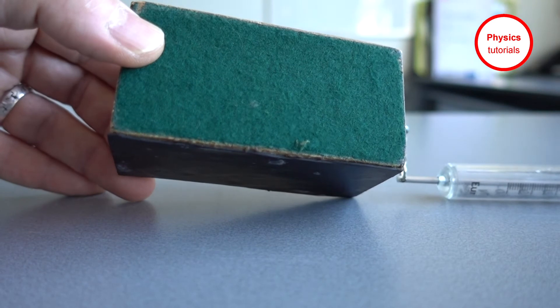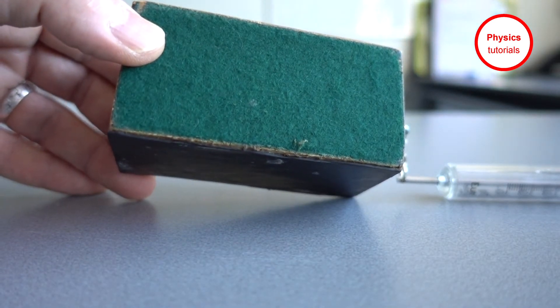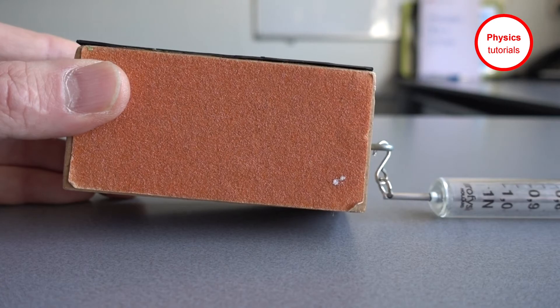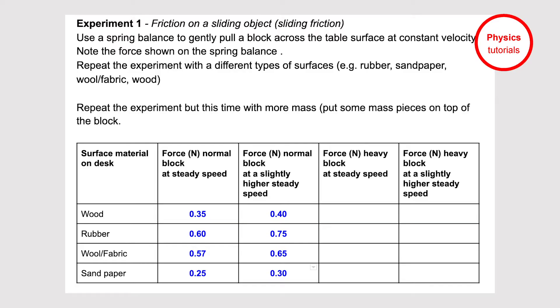We do the same experiment again with the fabric side and the sandpaper side of the block. Then I write down these results in the table of the reader.